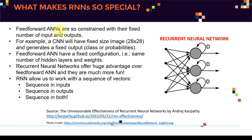Feed-forward artificial neural networks are so constrained with their fixed number of inputs and outputs. When we trained a basic convolutional neural network, we had a fixed size input. For the Fashion MNIST dataset, we had 28 pixels by 28 pixels. If we wanted to test our network on a new image, we used to resize that image to fit into that specific 28 by 28 pixels.